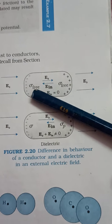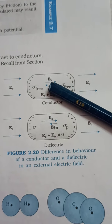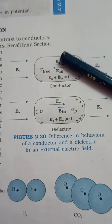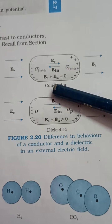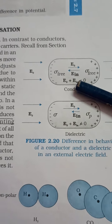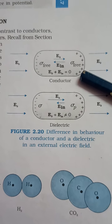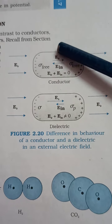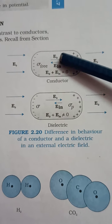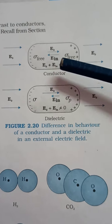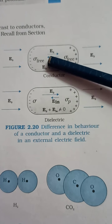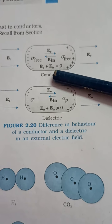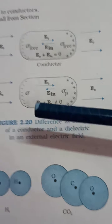The internal field produced is in the opposite direction of the external electric field inside the conductor. When we sum up both fields, the resultant is zero — because it is a conductor, it conducts all the external field. The resultant field produced inside the conductor is zero.